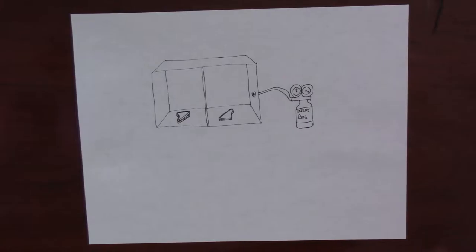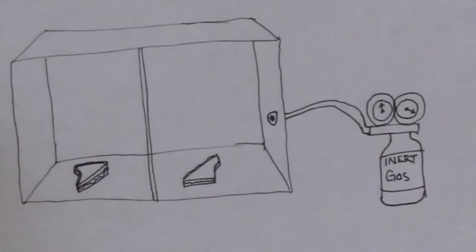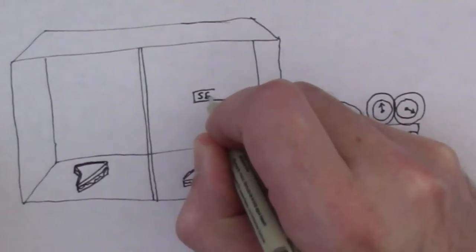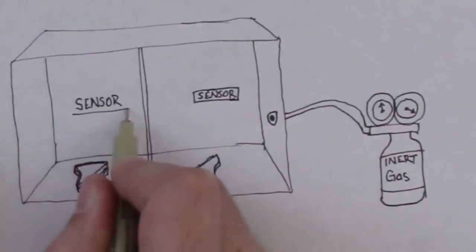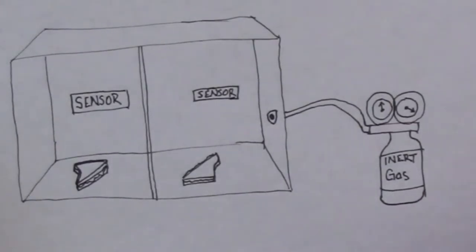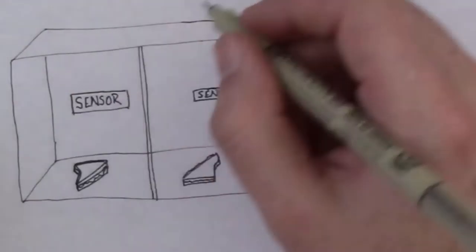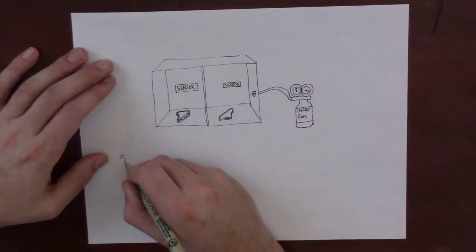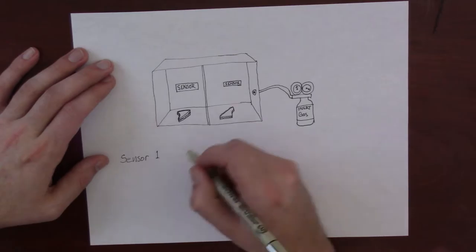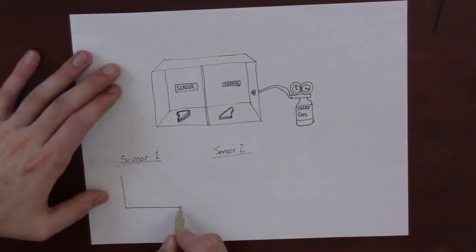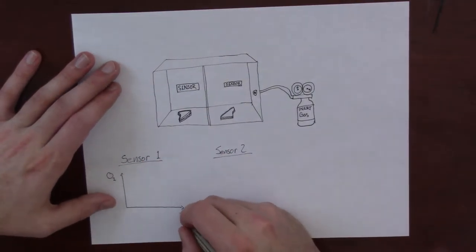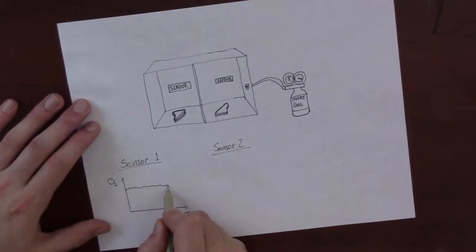The first sensor, open to the atmosphere, would have pretty constant oxygen level. But the second one, I imagine the box wouldn't be perfectly sealed so the oxygen would rise up a little bit, and once it got over a threshold we'd puff in some of that inert gas, and that would drop the oxygen level down. We'd rinse and repeat.